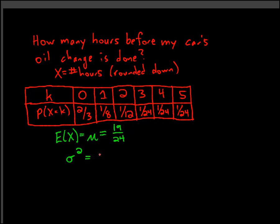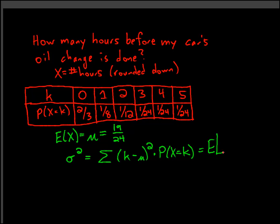To calculate the variance, we add up the squares of the differences between the possible values and the mean, multiplied by their probabilities. This is written as an expectation — it's the expectation of (x minus mu) squared — because expectation says that we multiply this by its probability. So we plug in k for x, multiply it by the probability of getting that k, and then add up all those products.